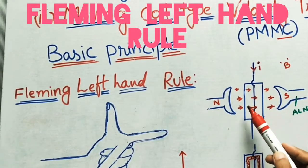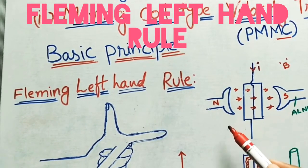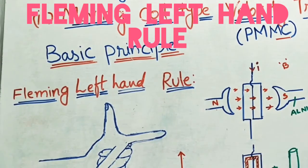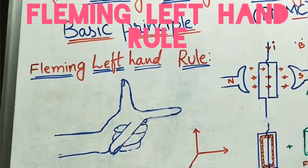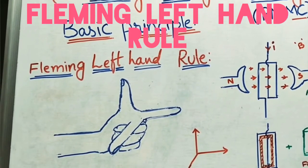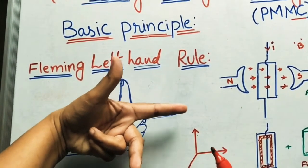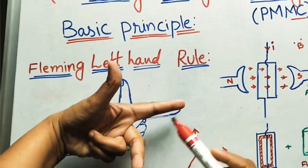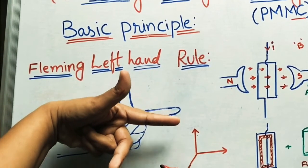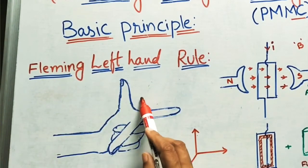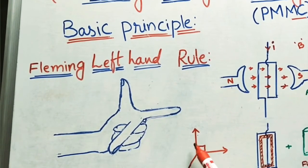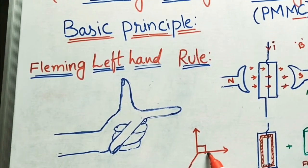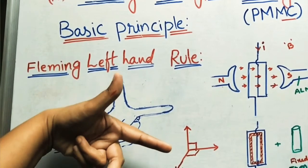To understand the direction of current and which direction the coil is moving — clockwise or anti-clockwise — and in which direction the flux is moving, we follow Fleming's Left Hand Rule. Keeping our fingers at 90 degrees to each other: the thumb, the index finger, and the middle finger are all at 90 degrees to one another.